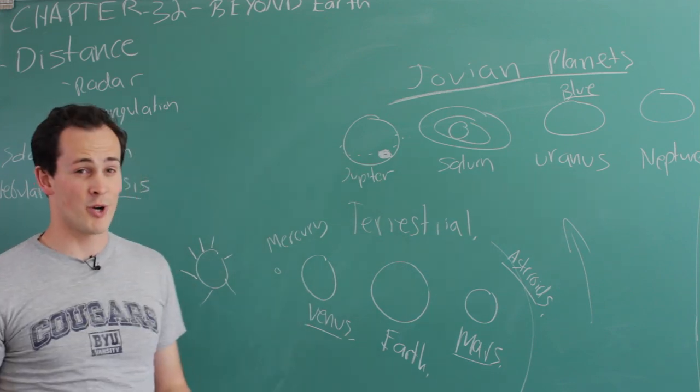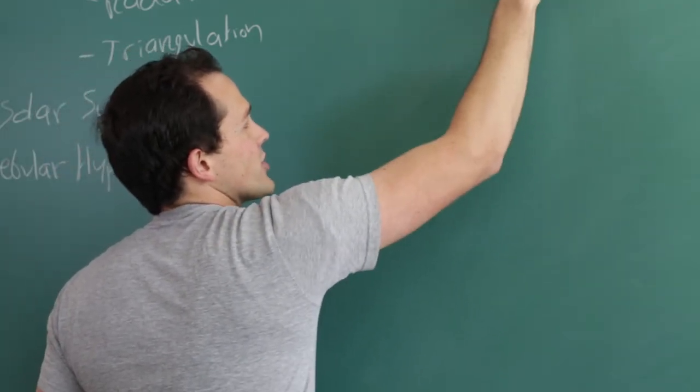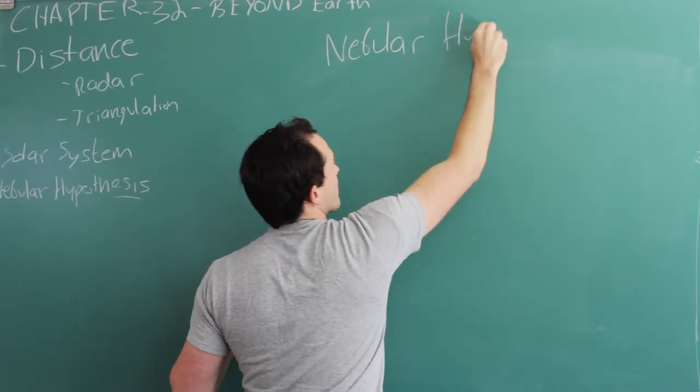As you'll notice, Pluto is actually classified as a dwarf planet. Pluto didn't make the cut. Now let's talk about the formation of the solar system itself. This is something called the nebular hypothesis.